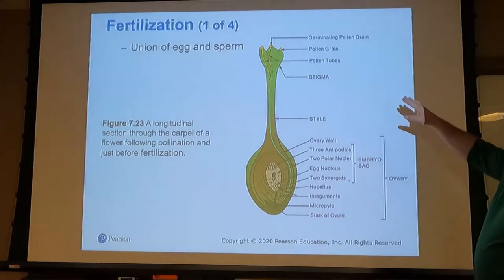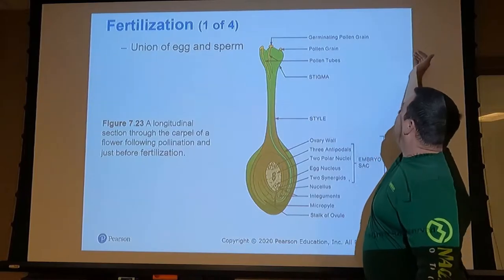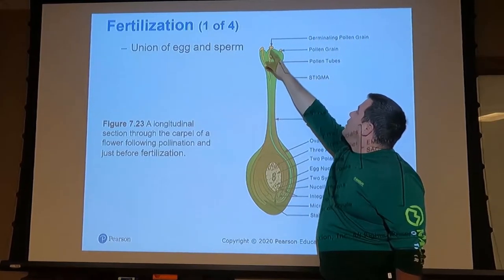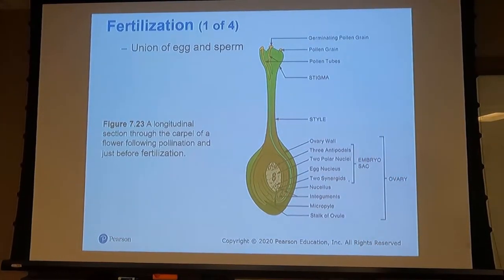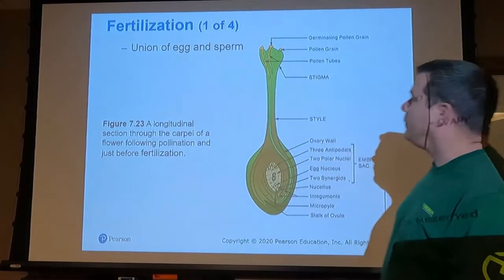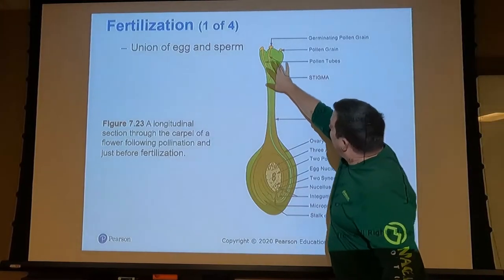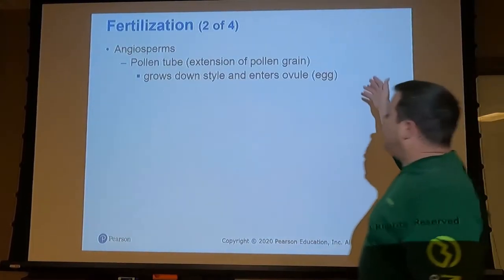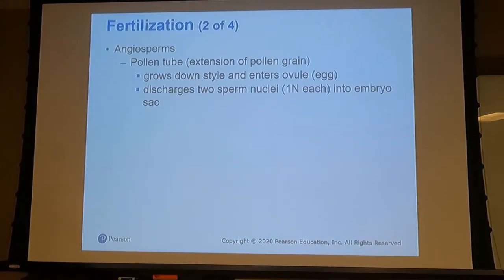Looking at a cross-section of a pistil: down here we have the ovary, the style, and the stigma. Pollen coming from a bird, bee, or insect drops onto the stigma. That pollen grows down the style into the ovary and fertilizes the egg. In angiosperms, the pollen tube grows all the way down to the ovary, and when the pollen grain lands on the stigma it grows down the style into the ovule.